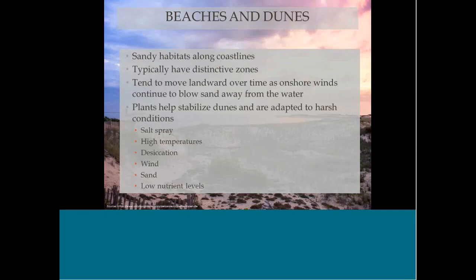Shifting gears for the last part: beaches and dunes are another common habitat type for living shoreline sites. These are the sandy habitats along coastlines, and just like salt and brackish marshes, they have really distinctive habitat zones that are visually obvious.